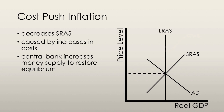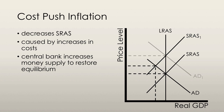Cost-push inflation starts when production costs for an economy as a whole increase. An increase in the money wage rate or raw materials could cause such an outcome. The short-run aggregate supply curve shifts to the left, resulting in a higher price level and an unemployment rate higher than the natural unemployment rate.